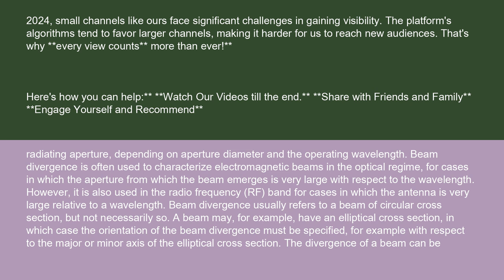Beam divergence is often used to characterize electromagnetic beams in the optical regime, for cases in which the aperture from which the beam emerges is very large with respect to the wavelength. However, it is also used in the radio frequency (RF) band for cases in which the antenna is very large relative to a wavelength.